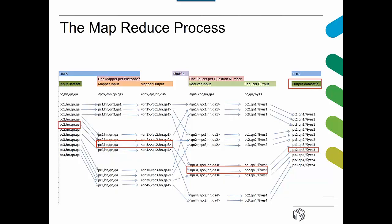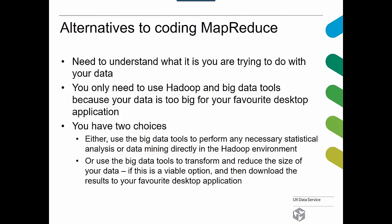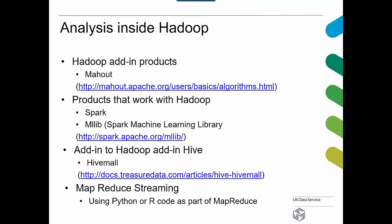There are alternatives to MapReduce. First, you need to understand your data. You only need Hadoop for big data because it's too big. You've got two choices: either perform the analysis inside Hadoop using specialized tools, or use big data tools to transform and reduce the size of your data and then download the results to your preferred desktop application. If you do have to analyze inside Hadoop, there are add-ons available: Mahout, Spark — which also works standalone and includes MLlib, a machine learning library — and HiveMount, an add-on to Hive for data analysis functions.